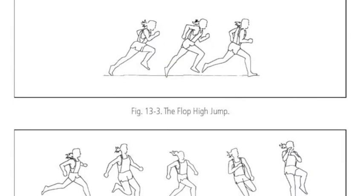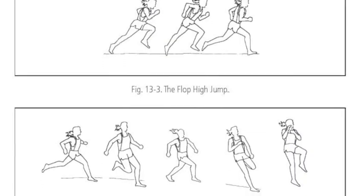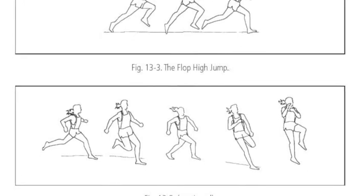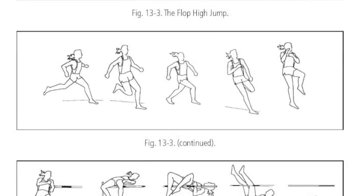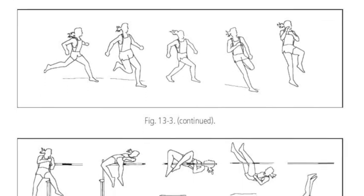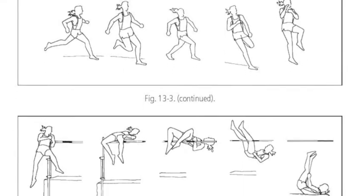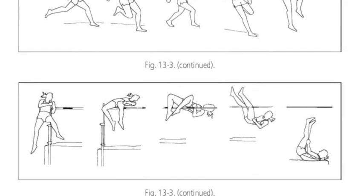The goal of the high jump is to pass the entire body over the bar without disturbing it, which is done by getting the center of mass as close as possible to the bar. The world record for this sport progressed until it reached 2.45 meters, thanks to the Fosbury flop introduced by Dick Fosbury at the 1968 Olympics.